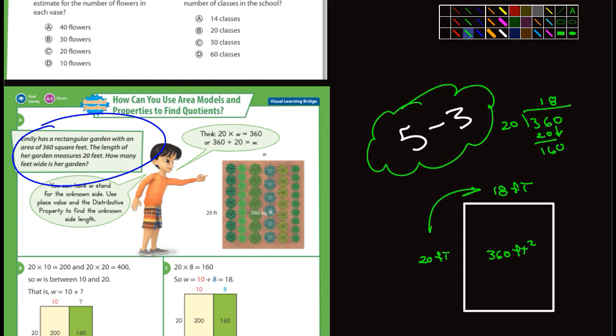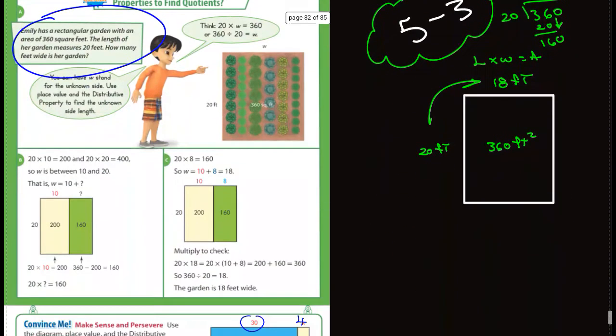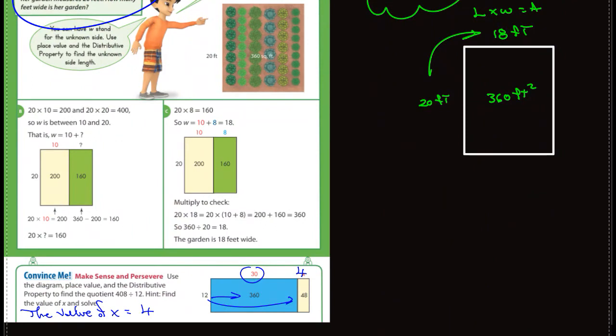So that means this side is 18 feet. Because remember, length times width equals area. And this is the area they gave us. So whenever you have a problem where they give you the area and one of the sides, just divide that area by that side and you'll get the other side. So you can look at the example they gave you here for A, B, and C.